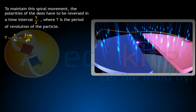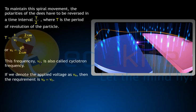T equals 1 by Vc which equals 2πm divided by q times b, or Vc equals qb divided by 2πm. This frequency Vc is also called cyclotron frequency. If we denote the applied voltage as Va, then the requirement is Va equals Vc. This condition is called the resonance condition.